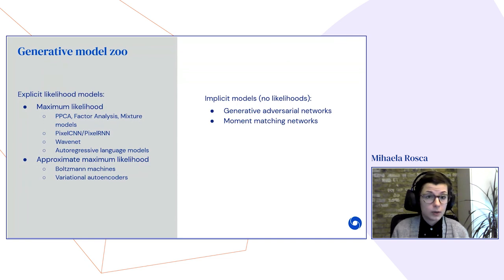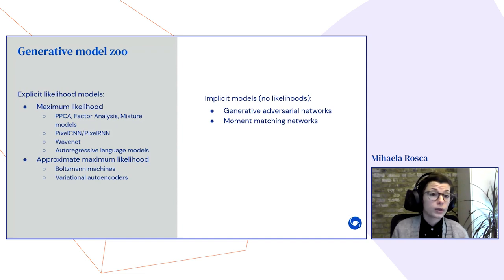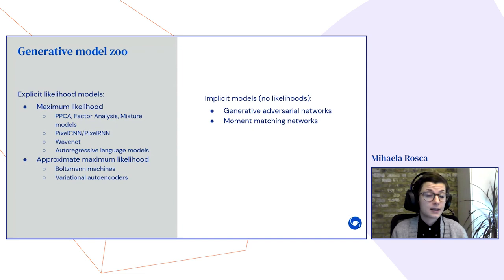You've probably seen explicit likelihood models before, often trained by maximum likelihood — maximizing the probability of the data under our model. Such models include probabilistic PCA, factor analysis, mixture models, PixelCNN, PixelRNN, WaveNet, and autoregressive language models. For latent variable models, we often use approximate maximum likelihood, like variational autoencoders. But today we're going to talk about implicit models — specifically generative adversarial networks.